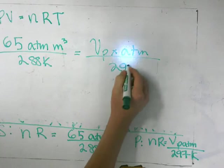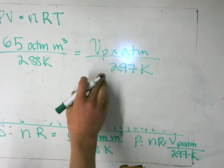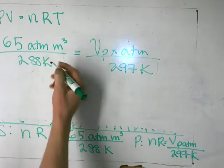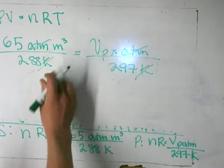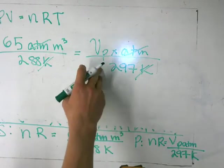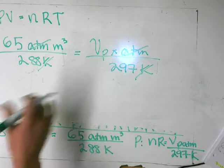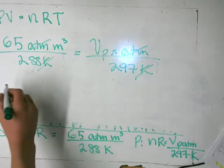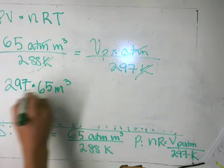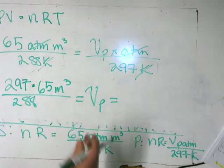The units on different sides are the same. We're going to move the meters cubed out of it. Vp over 297 equals 65 divided by 288. To solve for Vp, we multiply both sides — basically solving the problem.